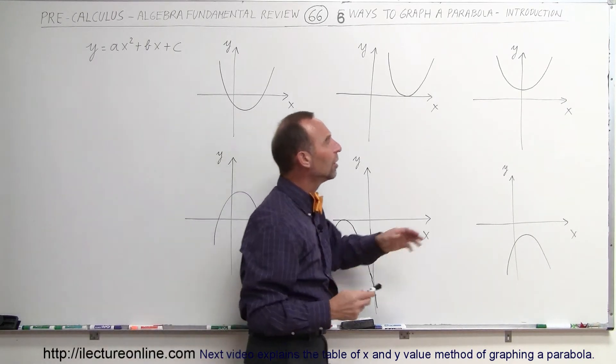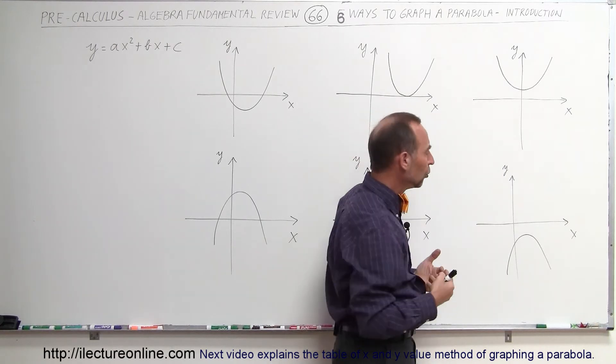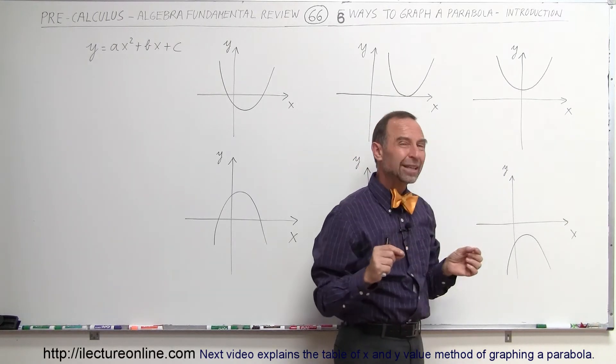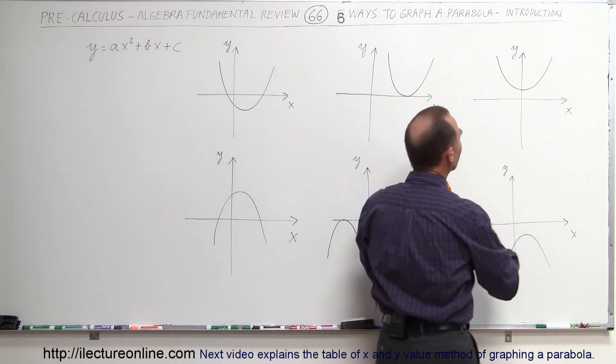Now sometimes it doesn't cross the x-axis, so there are no what we call real solutions to the quadratic equation, but there are what we call imaginary solutions. So we can still kind of find where the parabola is located.